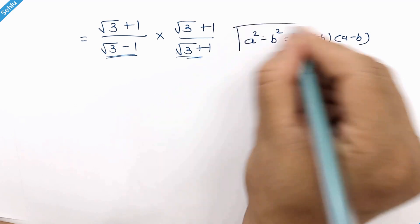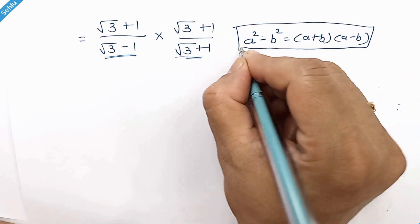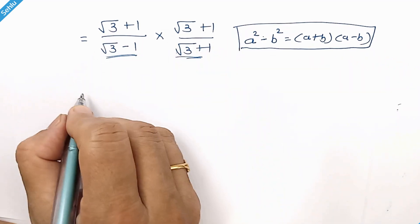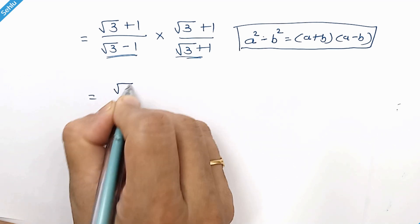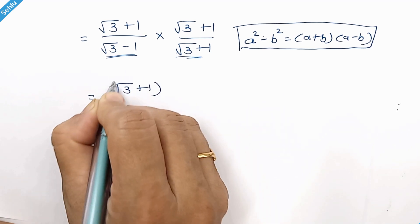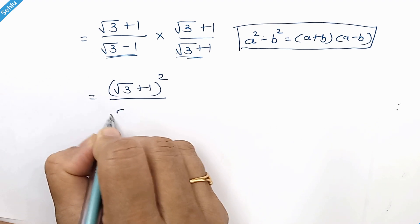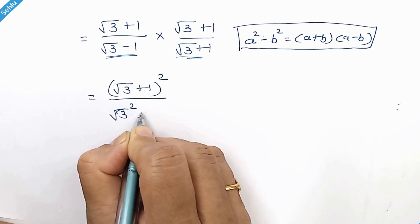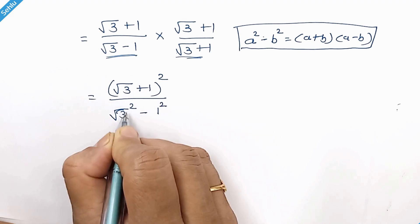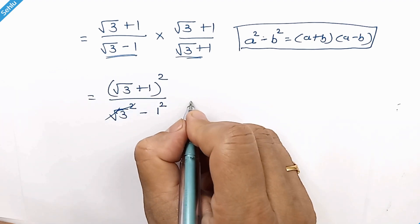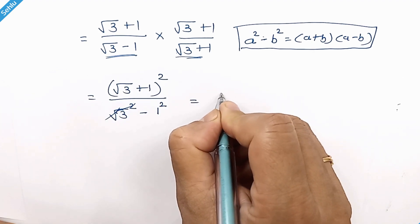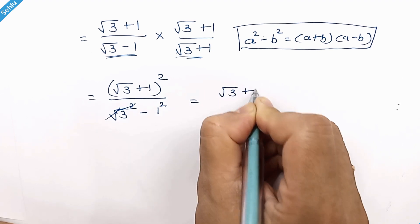And this can be written as square root 3 plus 1 whole squared over square root 3 squared minus 1 squared. Square and square root will cancel each other. Now we have square root 3 plus 1 over 2.